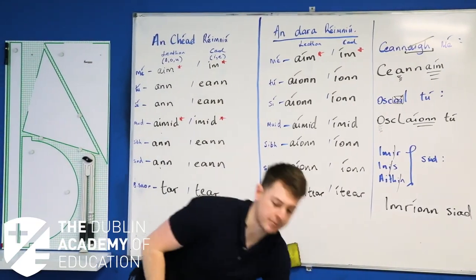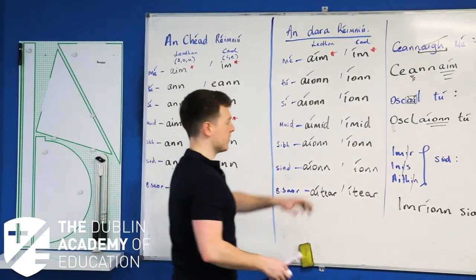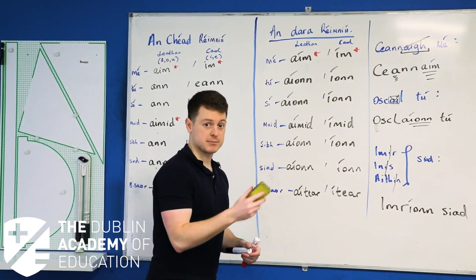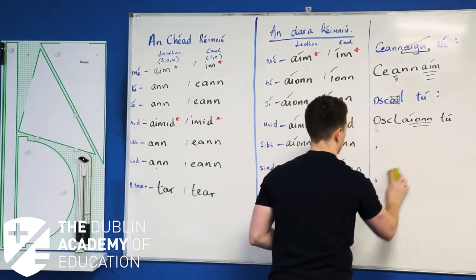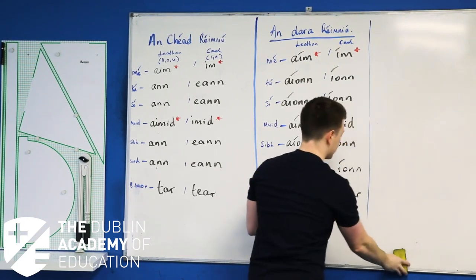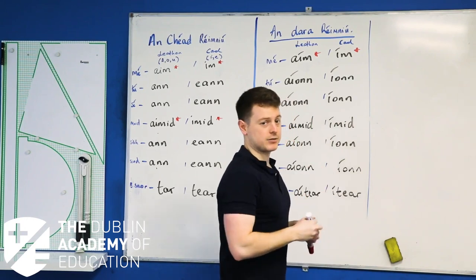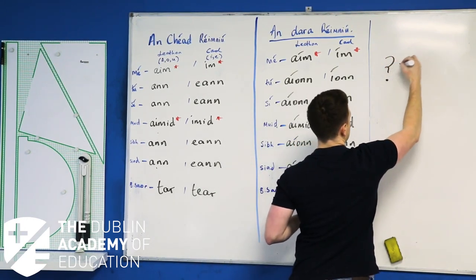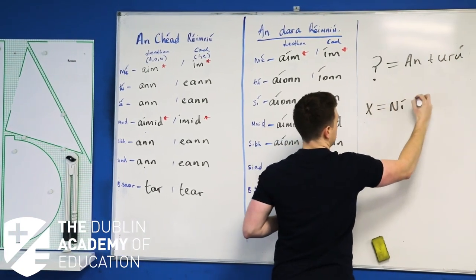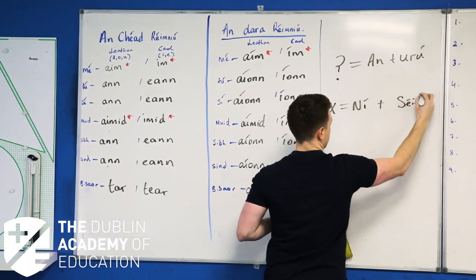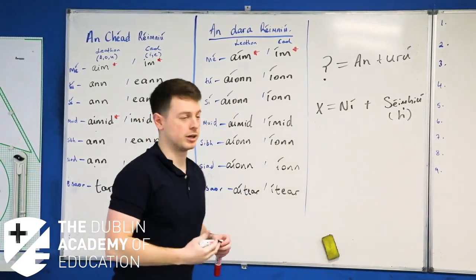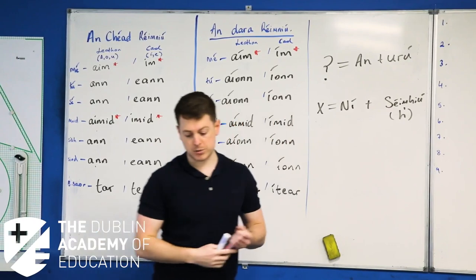The only other thing you have to remember is when we've got questions and when we've got a negative. Questions and negative statements impact the start of the verb. For a question in the present tense, we use an plus an urú. And for a negative, we use ní and we put in a séimhiú — a H after the second letter in the word, where possible.